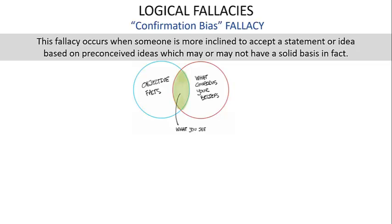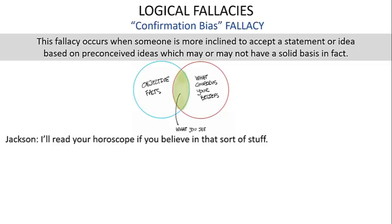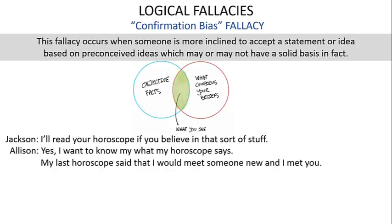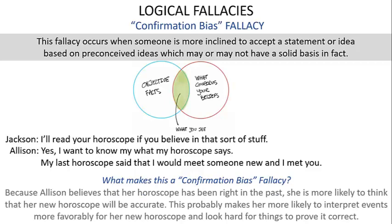The confirmation bias fallacy occurs when someone is more inclined to accept a statement based on preconceived ideas that may or may not have a solid basis in fact. Allison wants to hear her horoscope, saying: my last horoscope said I would meet someone new, and I met you. Because Allison believes her horoscope has been right before, she is more likely to interpret events favorably for her new horoscope and look hard for things to prove it correct.